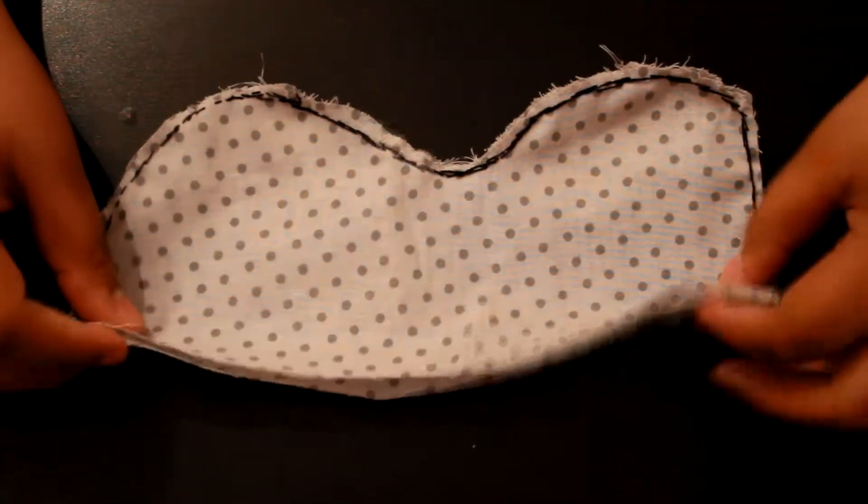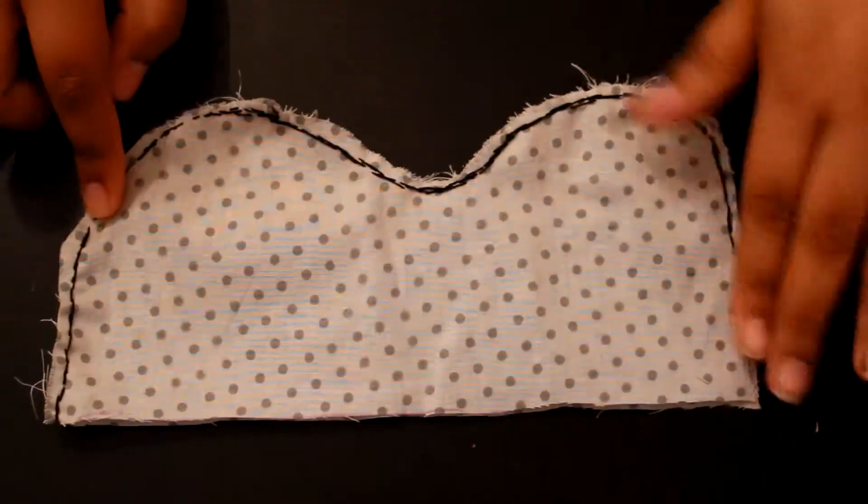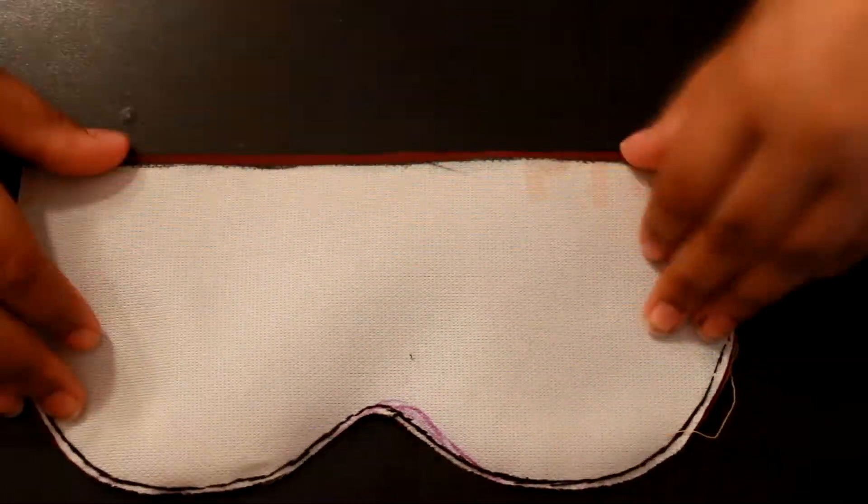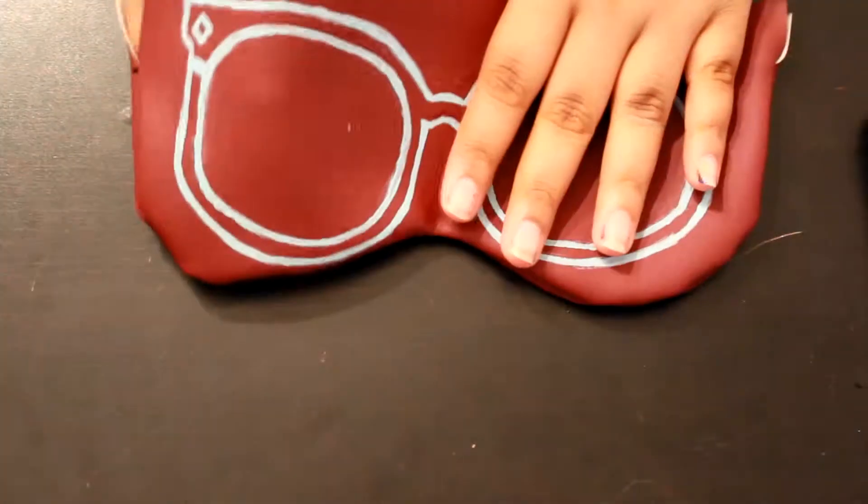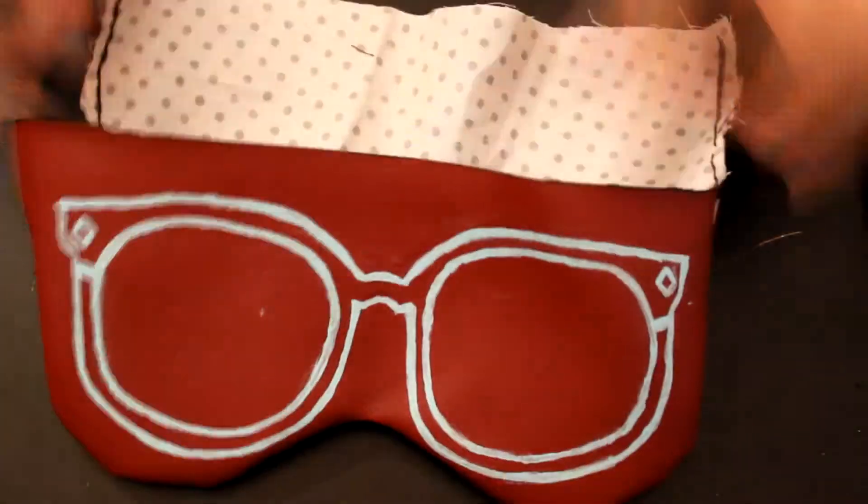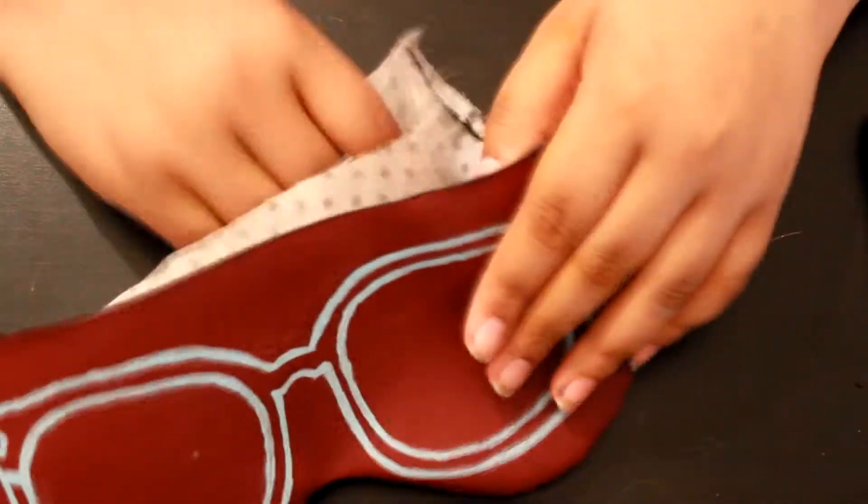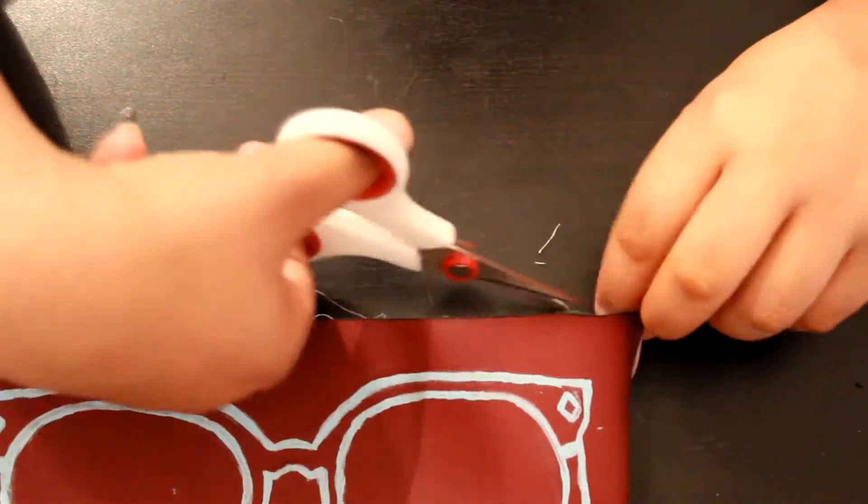And this is just the lining, the inside fabric. I cut it and sewed it exactly the way I sewed the outside. Next, you're just going to place the inside fabric inside of the bag, exactly like that. And if you have any loose threads, just snip them right off.